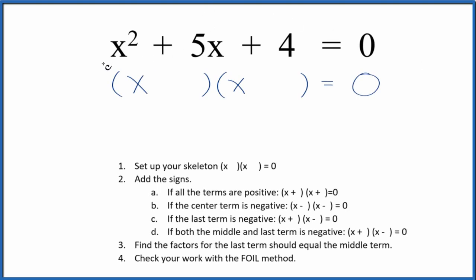If you're asked to factor the equation x squared plus 5x plus 4, here's how you do it. We're going to use these guidelines to help us out. The first thing we need to do is set up a skeleton equation, and I've got that right here. Next, once we have our skeleton equation, we can add in the signs.